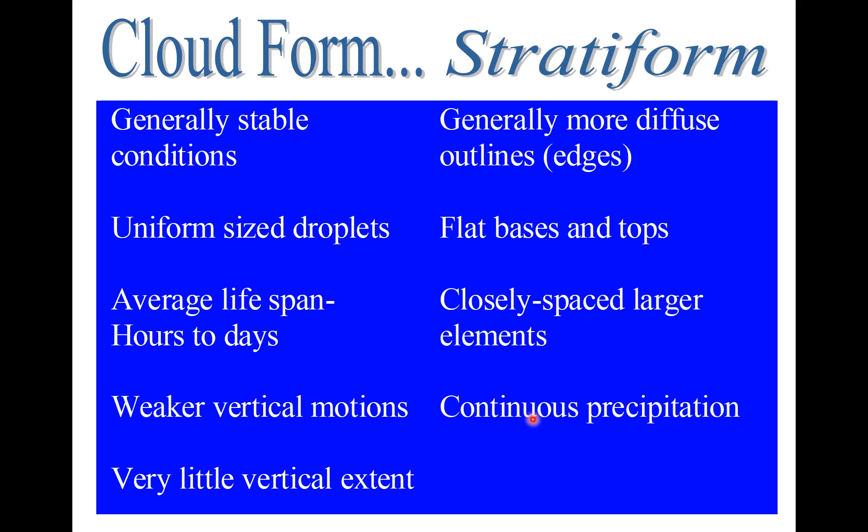Stratus clouds generally indicate a stable atmosphere. Within the cloud, water droplets are of uniform size. The average lifespan of stratus clouds is on the order of hours and can persist up to days. They have weaker vertical air motions and very little vertical extent — very flat like a blanket. They have more diffuse outlines, flat bases as well as flat tops, and closely spaced larger elements. Stratus clouds produce continuous precipitation — those really nasty, rainy days from start to finish with steady precipitation. You can get snow from stratus clouds as well if it's cold enough in the winter.